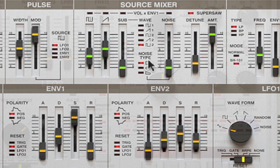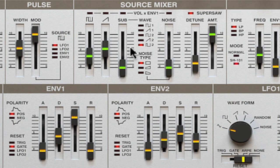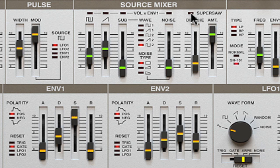The tone of Synth 1 is made up of the blend of these two faders — a little bit of square wave and sawtooth wave mixed — along with the super saw wave, which is selected by this button. I'm just going to adjust these parameters a bit for you.